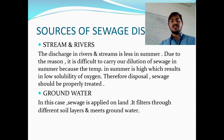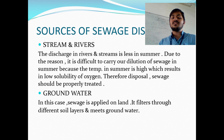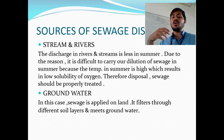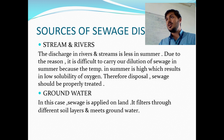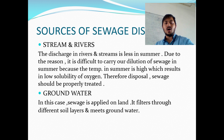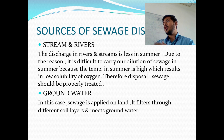Streams and rivers: the discharge into rivers and streams is less in summer. It is difficult to carry out dilution of sewage in summer due to higher temperature, which results in lower remaining oxygen.